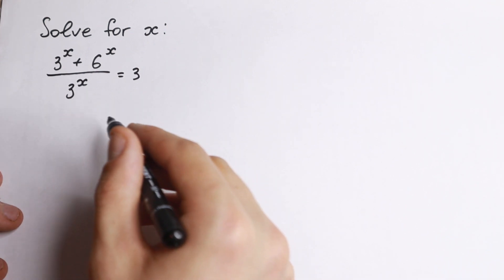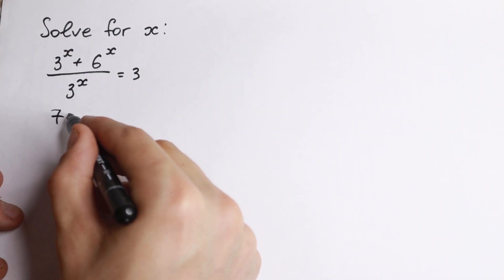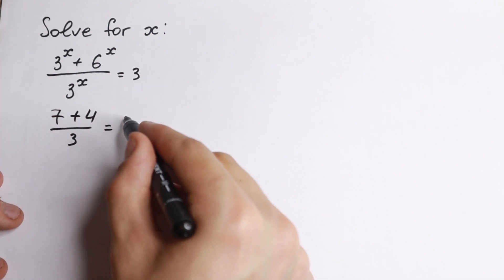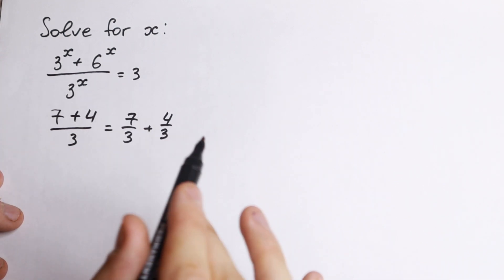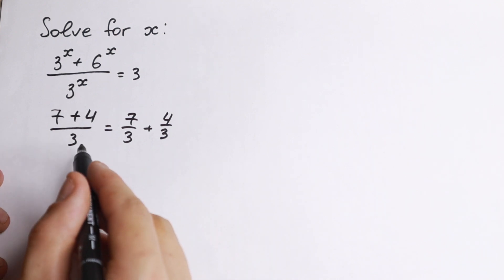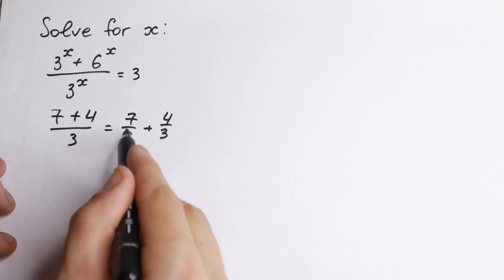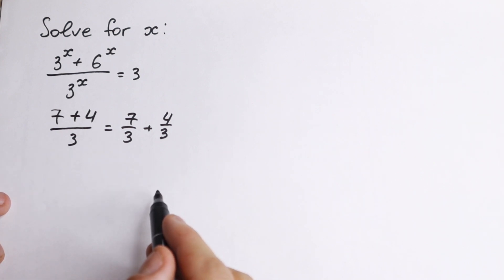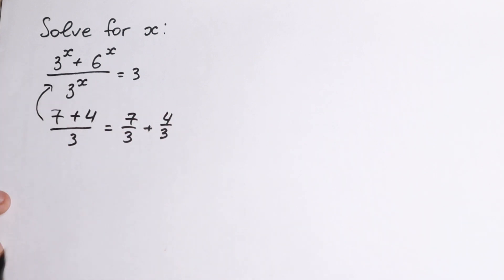First, I want to mention an important concept. If we have an expression like 7 plus 4 over 3, we can write it as 7 over 3 plus 4 over 3 — we can separate it. This is a basic rule from school: if we have a sum in our numerator over a denominator, we can split it. We have the same situation right here, with a sum in our numerator and a common denominator.